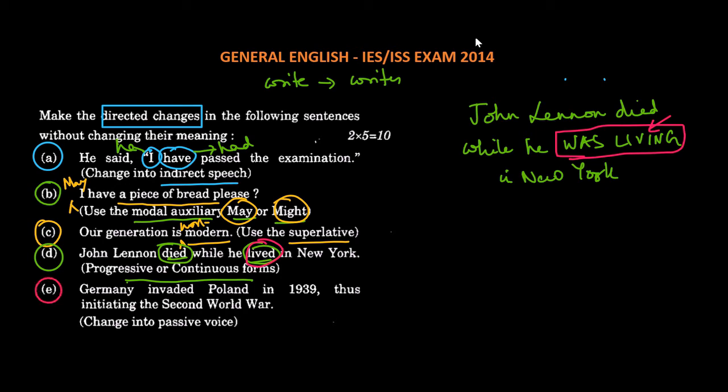So last one, Germany invaded Poland in 1939, thus initiating the second world war. Change into passive voice. So this is active. In active voice, the actor comes first and the receiver comes second. And in passive voice, the receiver comes first and the actor comes second. So here Germany is the actor which is coming first. Invaded Poland, Poland is the receiver. So Poland came second in the active voice.